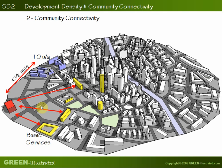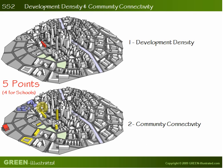So this is it for Sustainable Sites Credit 2 — two paths for compliance: development density and community connectivity. Either one will earn you the five points of this credit.